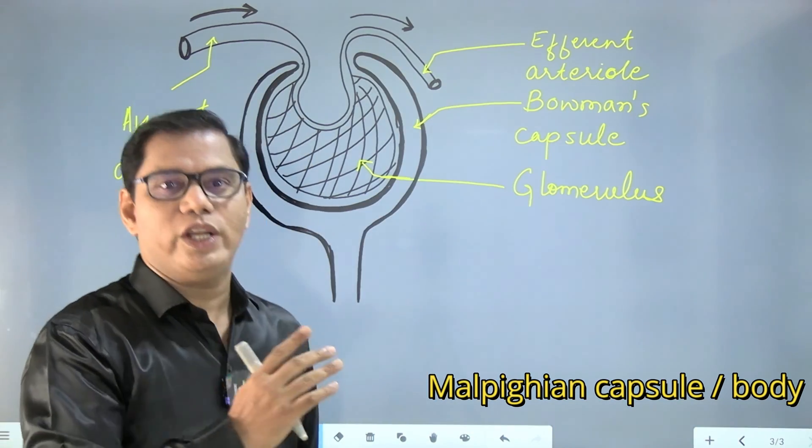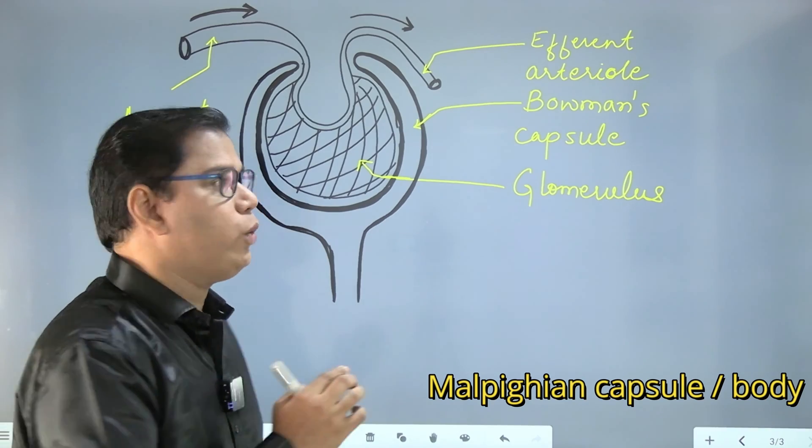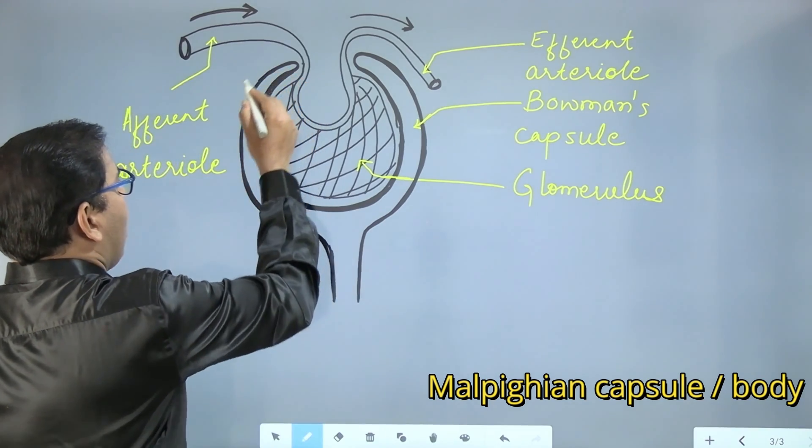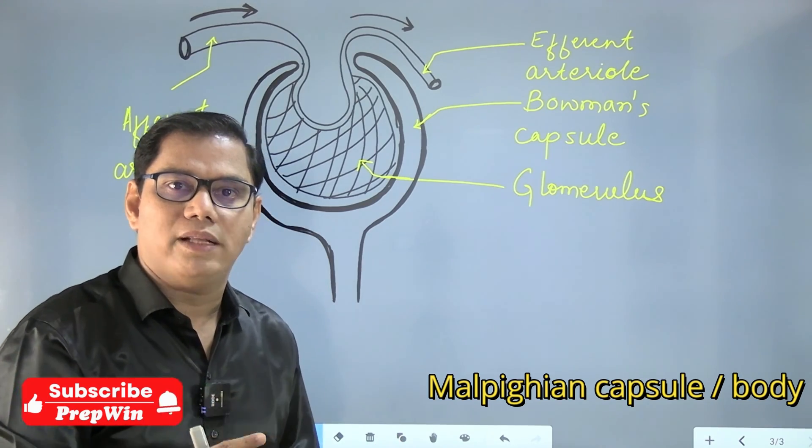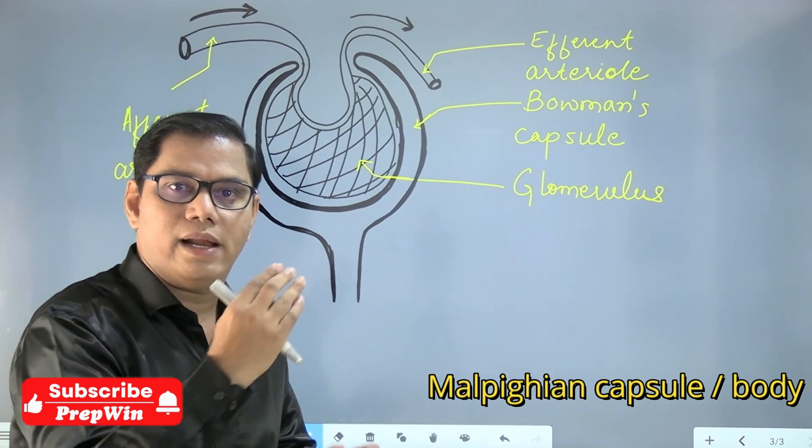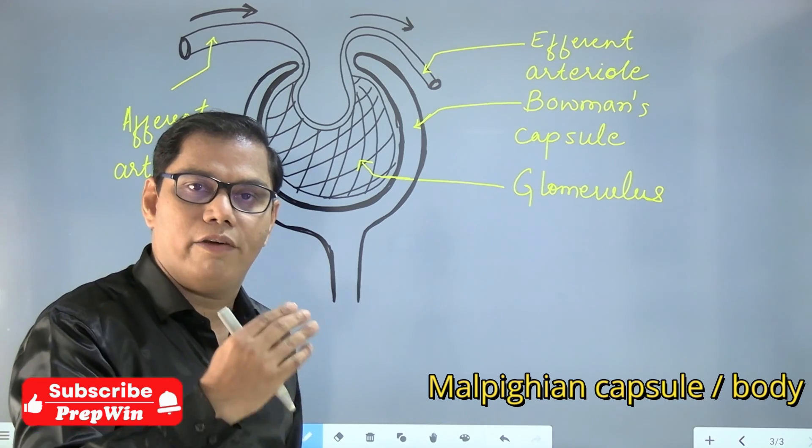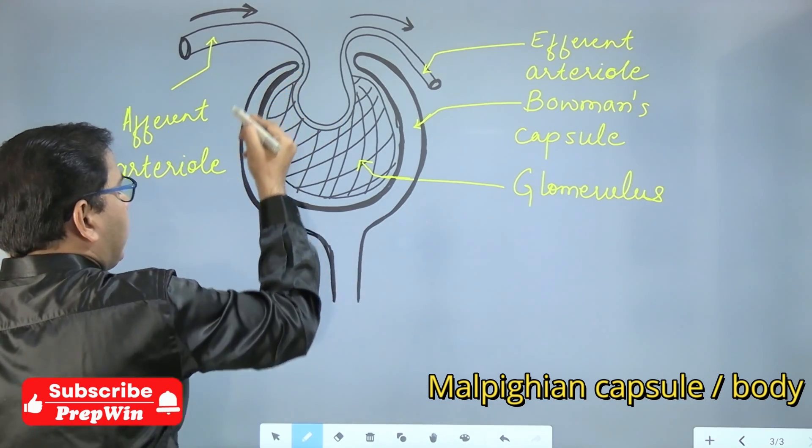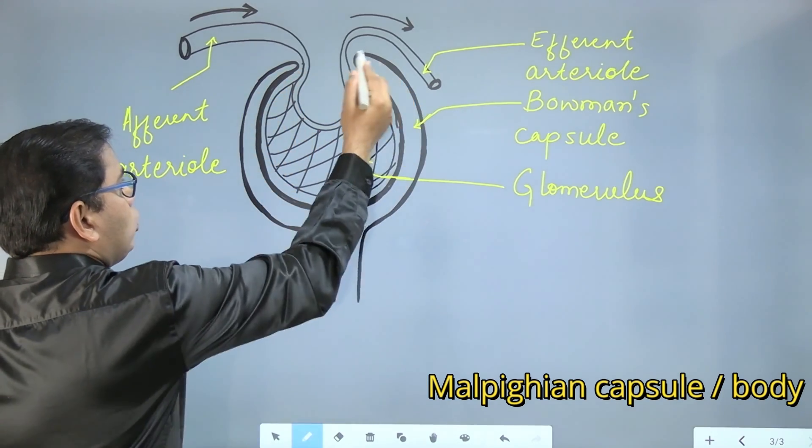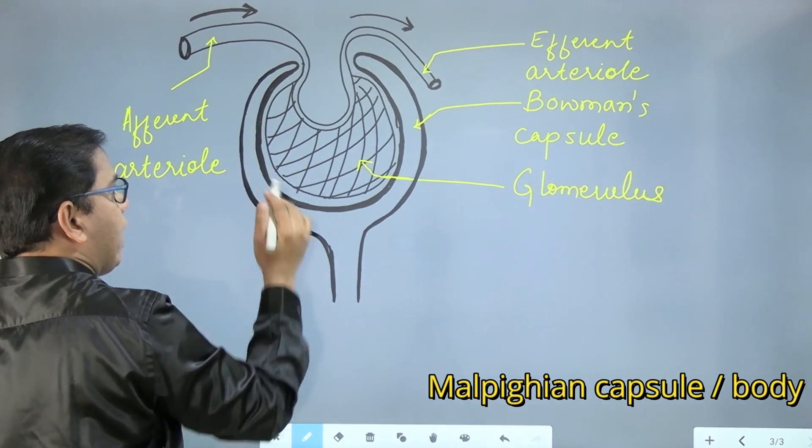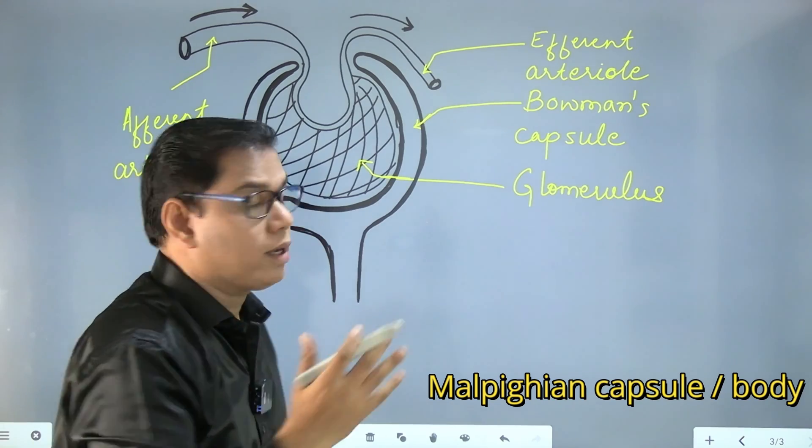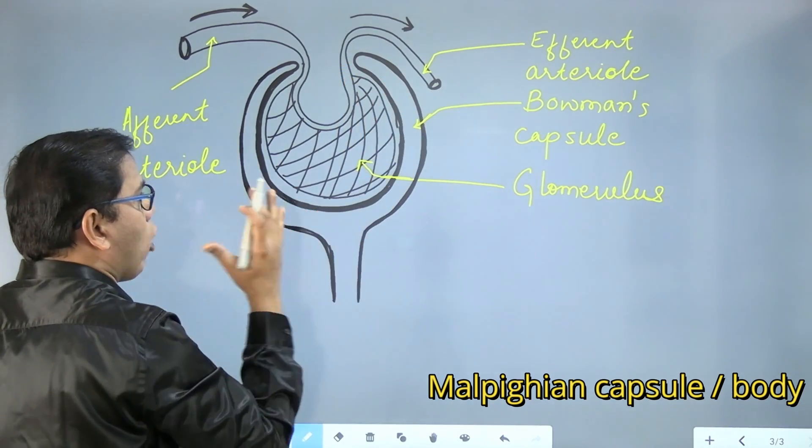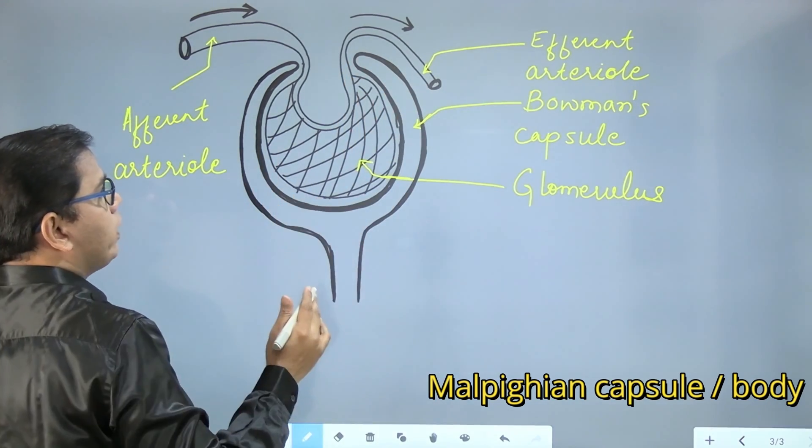To increase the beauty of your diagram, what you can do is you can use a pencil of a thick lead. There are various pencils available in the market having a lead of different sizes. You can use a thick lead pencil to show the Bowman's capsule. If you make the outline of the Bowman's capsule thick, Bowman's capsule will be prominently visible over here.